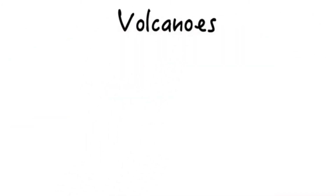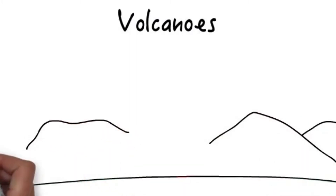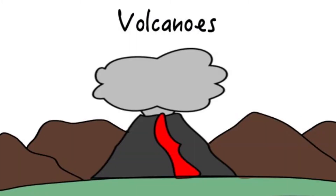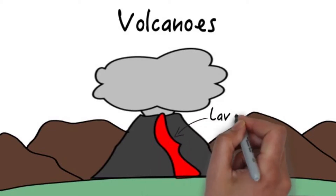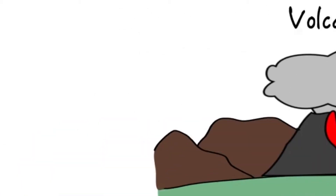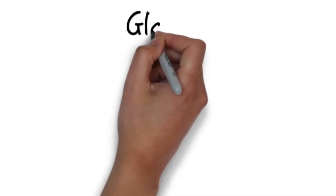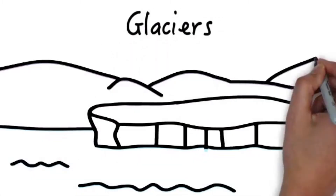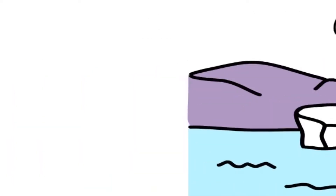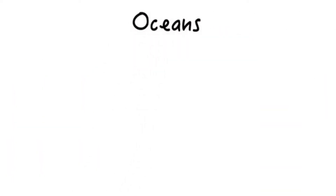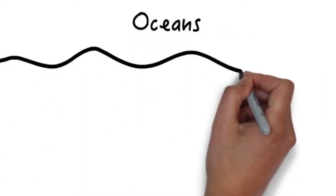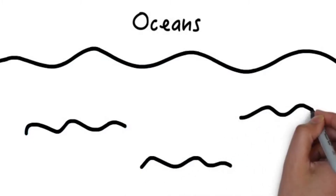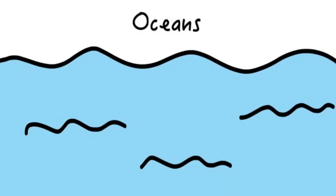Volcanoes are protuberances that result from the building up of hot magma beneath the Earth's crust. Some volcanoes can spew lava during volcanic eruptions. Glaciers are enormous blocks of moving ice formed in cold areas of the world. Oceans are the salt water covering that encompasses three quarters of the Earth's surface.